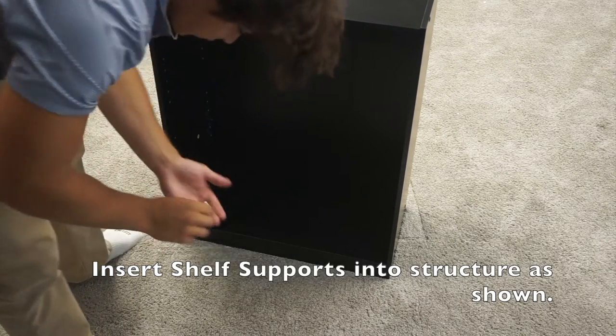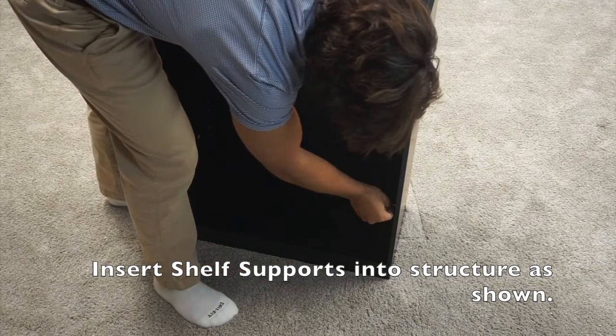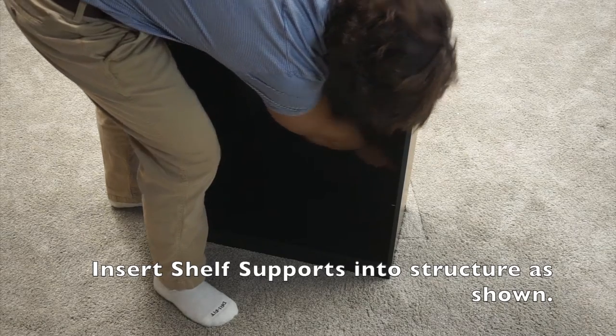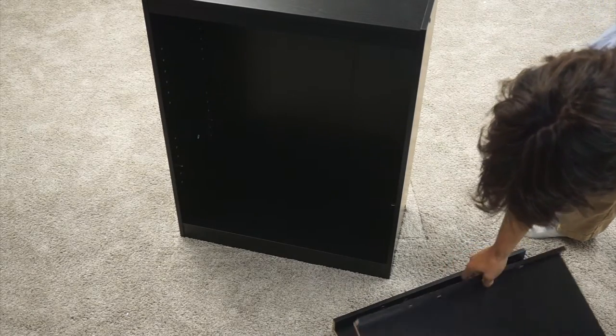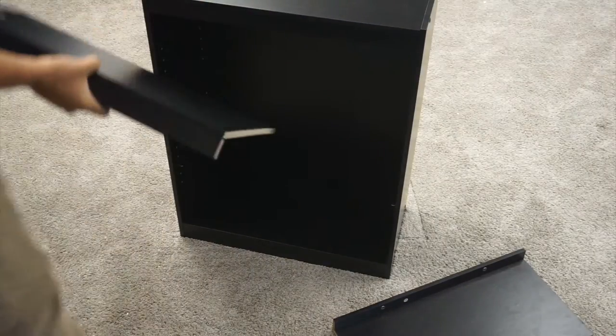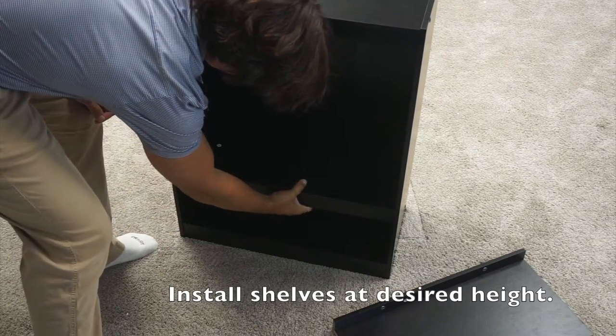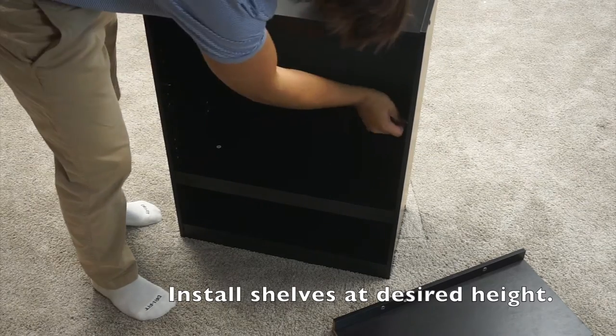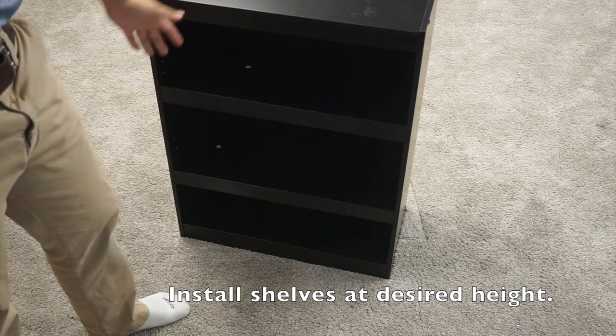You will want to insert four little supports for each shelf. Once you put four in, you can grab one of your B panels. Simply slide it on in. Once you have done this, you now have a complete assembly.